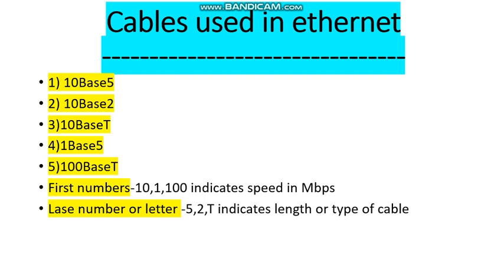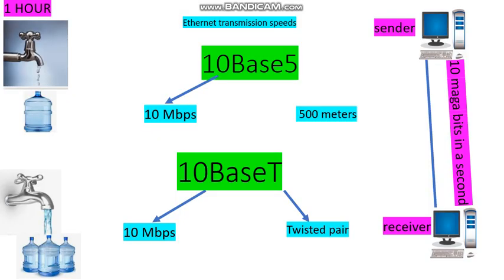For example, if we use a 10Base5 cable to connect two systems, then it can transfer 10 megabits per second to the receiver, and this cable can transfer data only up to 500 meters. If you want to transfer data over a larger distance, then we should use repeaters or bridges. Similarly, if you use a 10BaseT cable, then the cable can transfer data at the speed of 10 megabits per second and the cable is of type twisted pair.